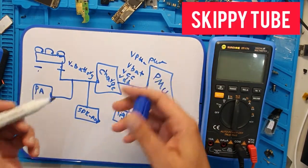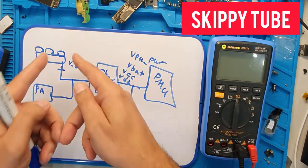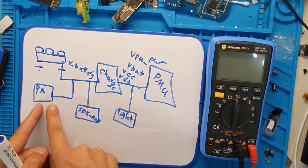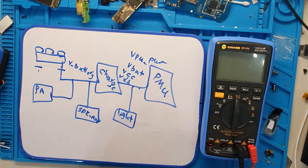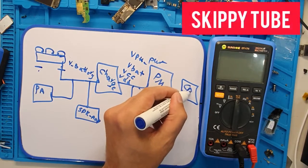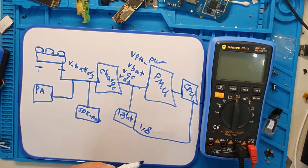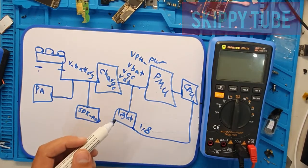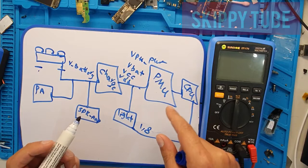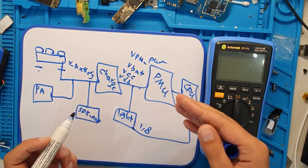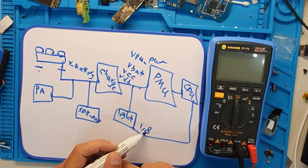Each chip needs the public voltage to turn on. For example, if the battery is 3.8 volts, this voltage comes to the chip. But even if the chip doesn't work, does the CPU have a 1.8 volt supply to turn on? When you press the power button, the CPU starts processing and then turns on the chips or ICs. This 1.8 volt is very important.